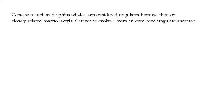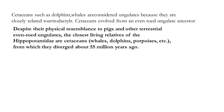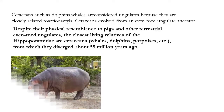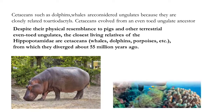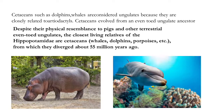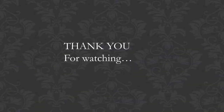You may find it weird, but cetaceans such as whales, dolphins, and porpoises are also ungulates, because they evolved from an even-toed ungulate ancestor. Hippos are more closely related to cetaceans than to pigs.